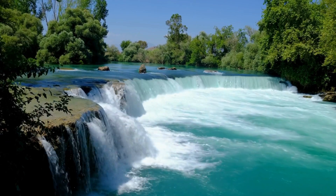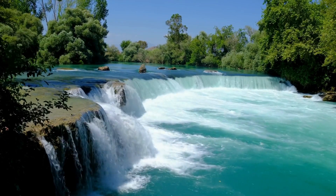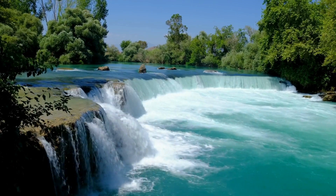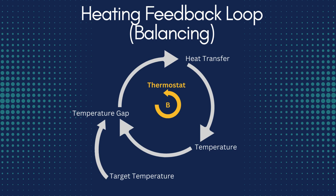Conversely, if the system strays too far from the goal, the balancing feedback strengthens, accelerating corrections to bring the system back in line. Let's visualise this with a thermostat in a room. When the room gets too cold, the thermostat switches on the heating, warming up the room. As the temperature approaches the target warmth, the heating eases off. That's the balancing loop in action, ensuring the room doesn't get too hot or too cold, but stays just right.